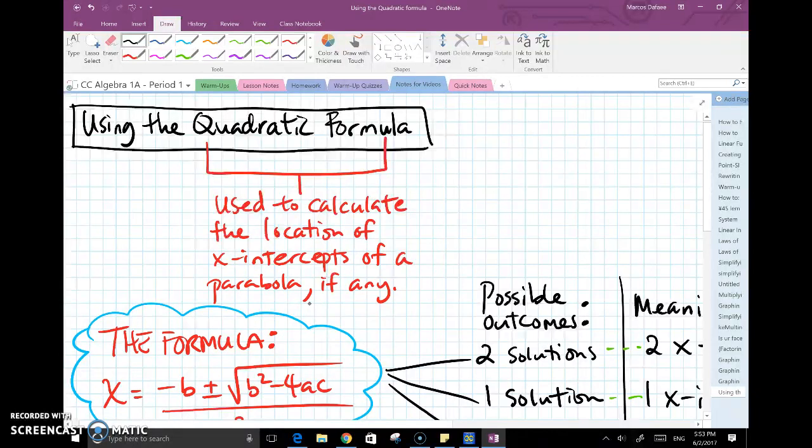Now there is never a guarantee that you will have an x-intercept all the time. In fact there are three specific cases to look at where we can see exactly how many x-intercepts you would get by using this formula.